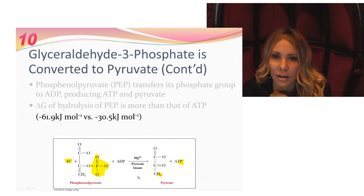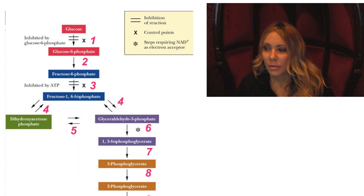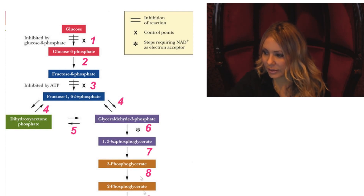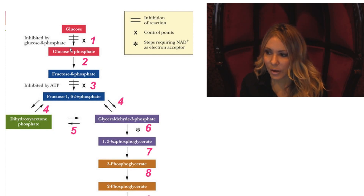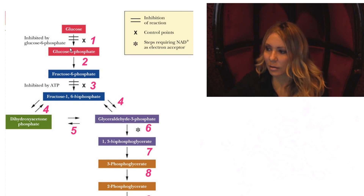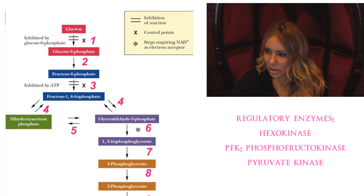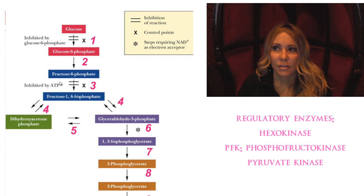For control, we have three steps: step one, step three, and step ten. Step one, catalyzed by hexokinase, is controlled by end-product inhibition — glucose 6-phosphate, the product of that reaction. If we have a lot of glucose 6-phosphate, that's an indicator of high energy available, so it feeds back and turns off the pathway. Step three is our most important step — inhibited by ATP, another indicator of high energy. ATP was a substrate as well as an allosteric inhibitor for PFK1, with a separate allosteric site distinct from the active site.